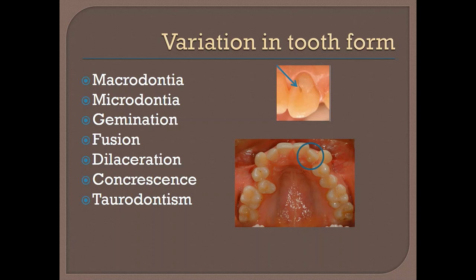Dens invaginatus and dens evaginatus are abnormalities in form. Dens invaginatus carries an increased risk of endodontic problems, and if not properly identified and treated, the tooth can lose its vitality, requiring endodontic treatment during orthodontic treatment. A patient with dens evaginatus, if severe enough, may have an effect on occlusion, overbite, and tooth displacement, and this must be considered during orthodontic planning to achieve proper occlusion.